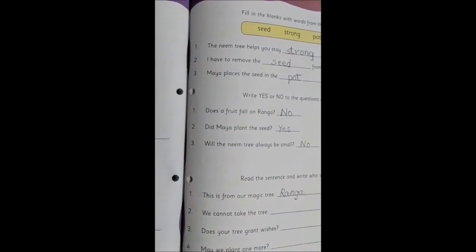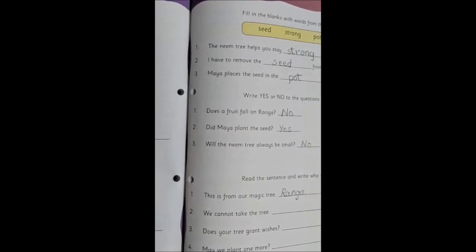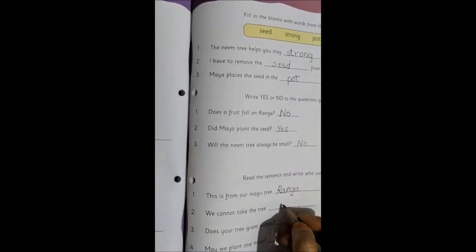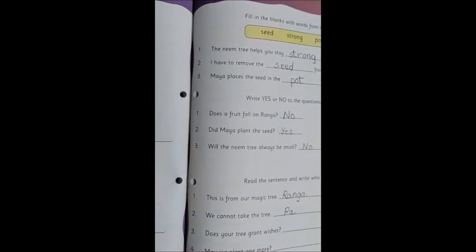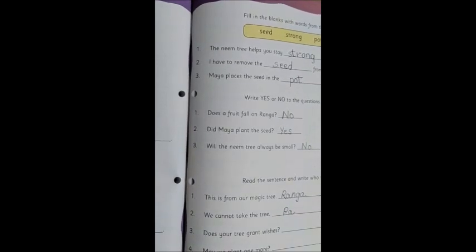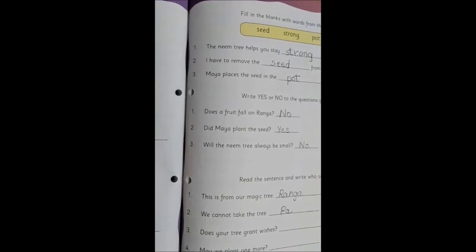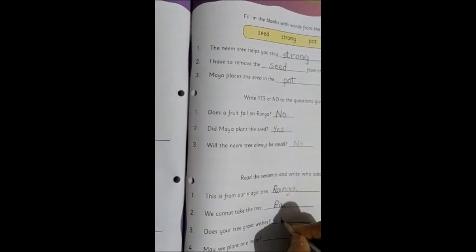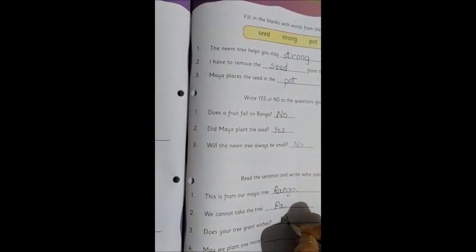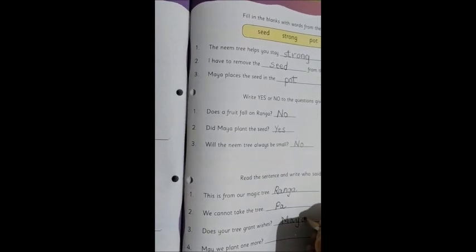Now moving on to the next one. We cannot take the tree. So Maya wanted to take the tree, and who said we cannot take the tree? Pa, the father. So he is Pa. Does your tree grant wishes? Who asks this? Maya. So what we will write? Maya, capital M. M-A-Y-A, Maya.